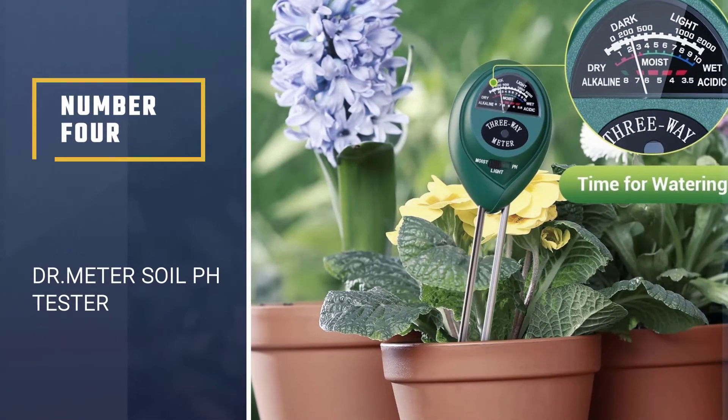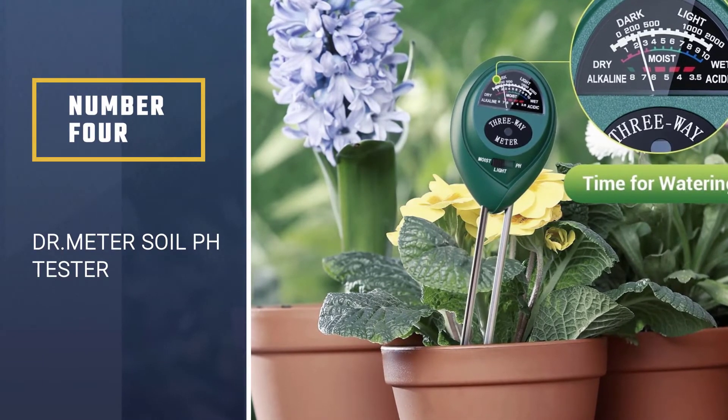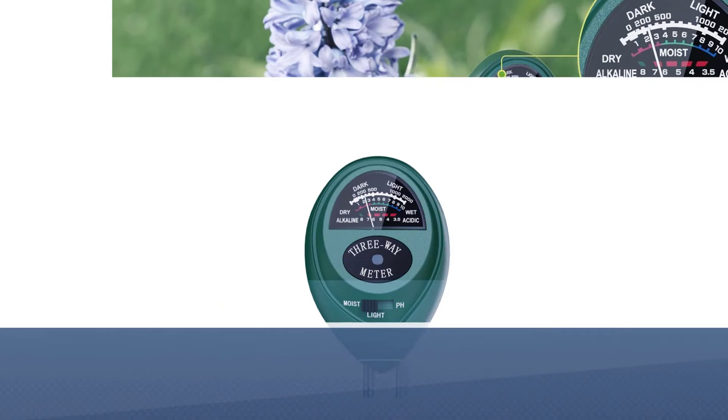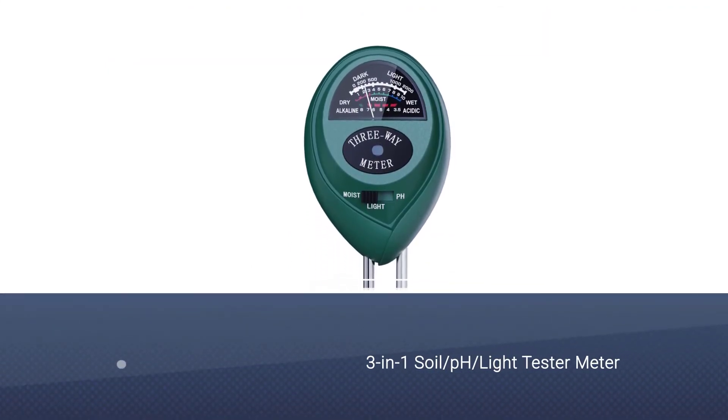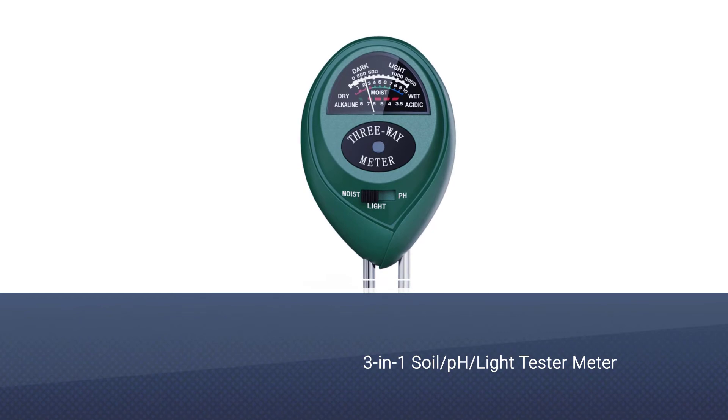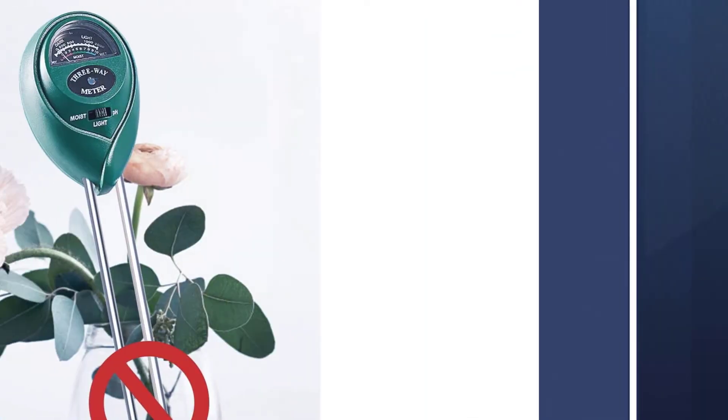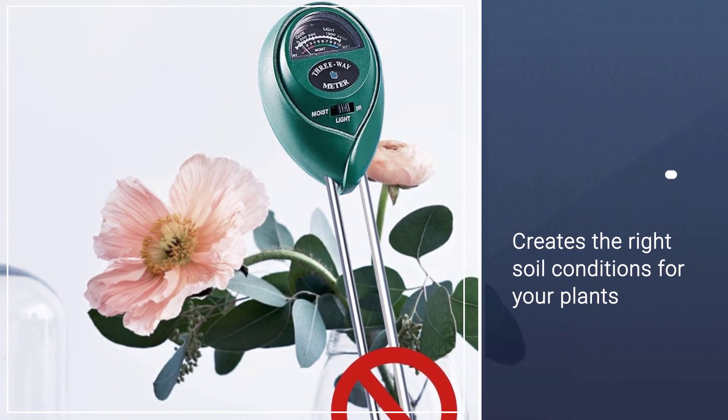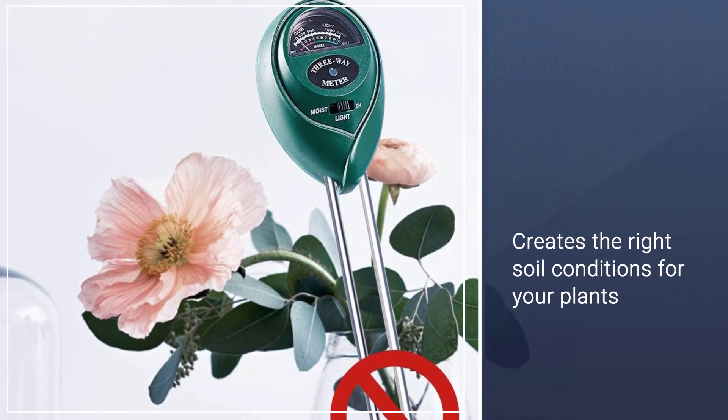Number four: Dr. Meter Soil pH Tester. The Dr. Meter three-in-one soil pH light tester meter will help you to create the right soil conditions for your plants. This handy gardening device lets you know the soil pH level, the moisture content, and whether your outdoor or indoor plants are getting adequate sunlight.